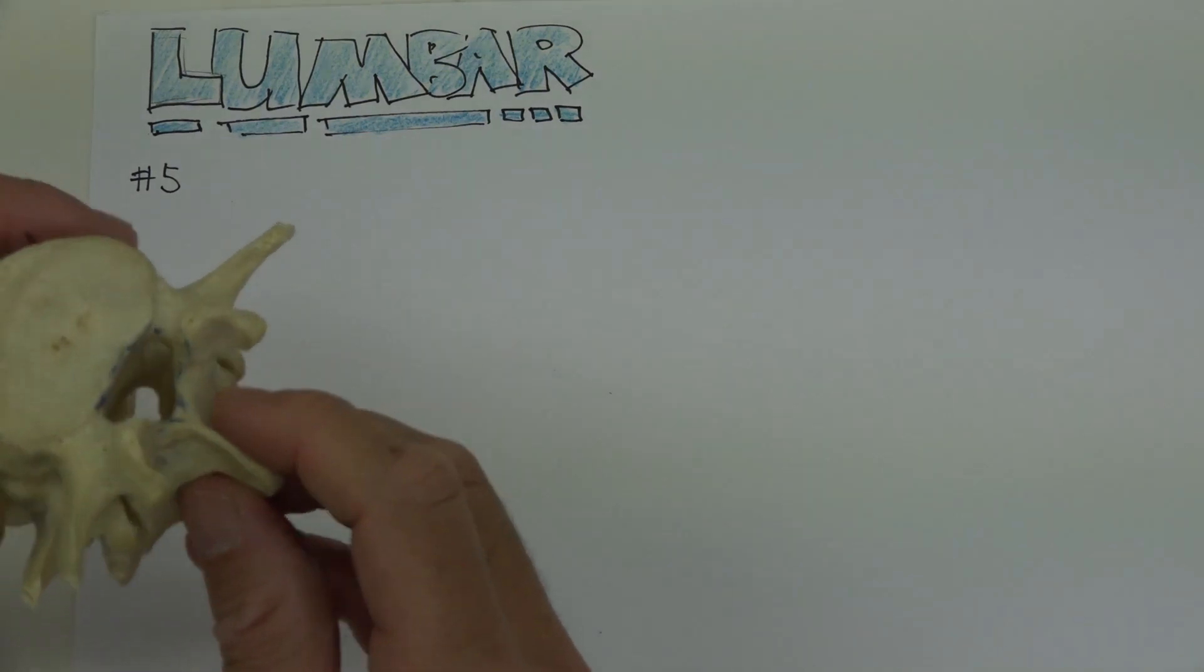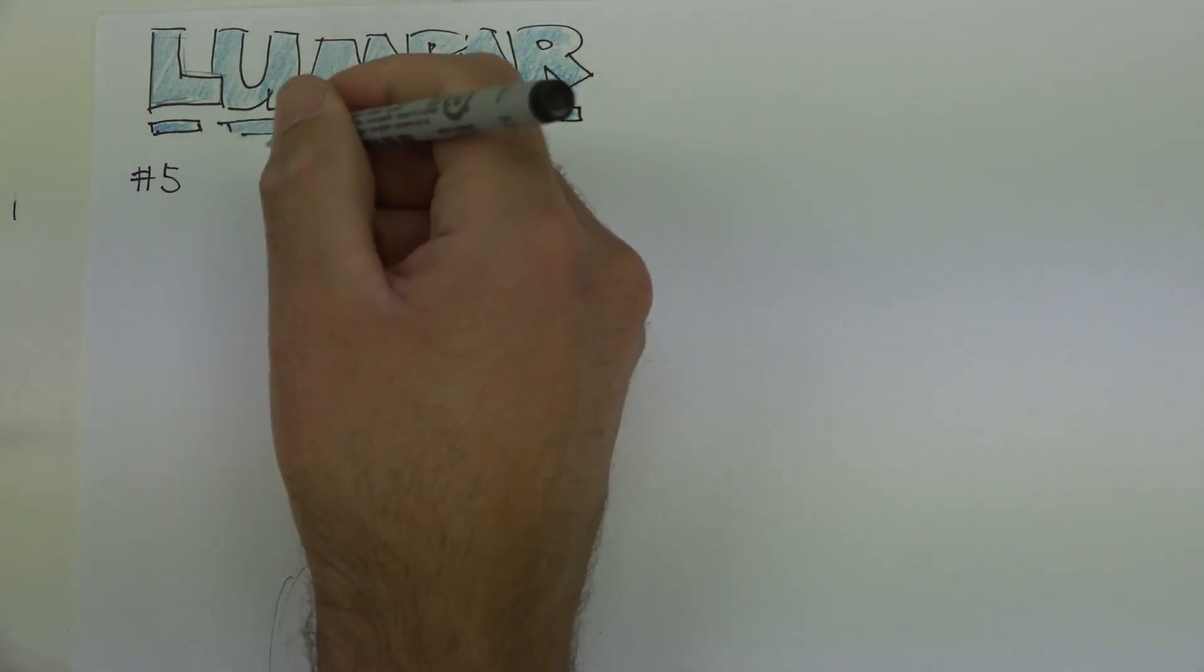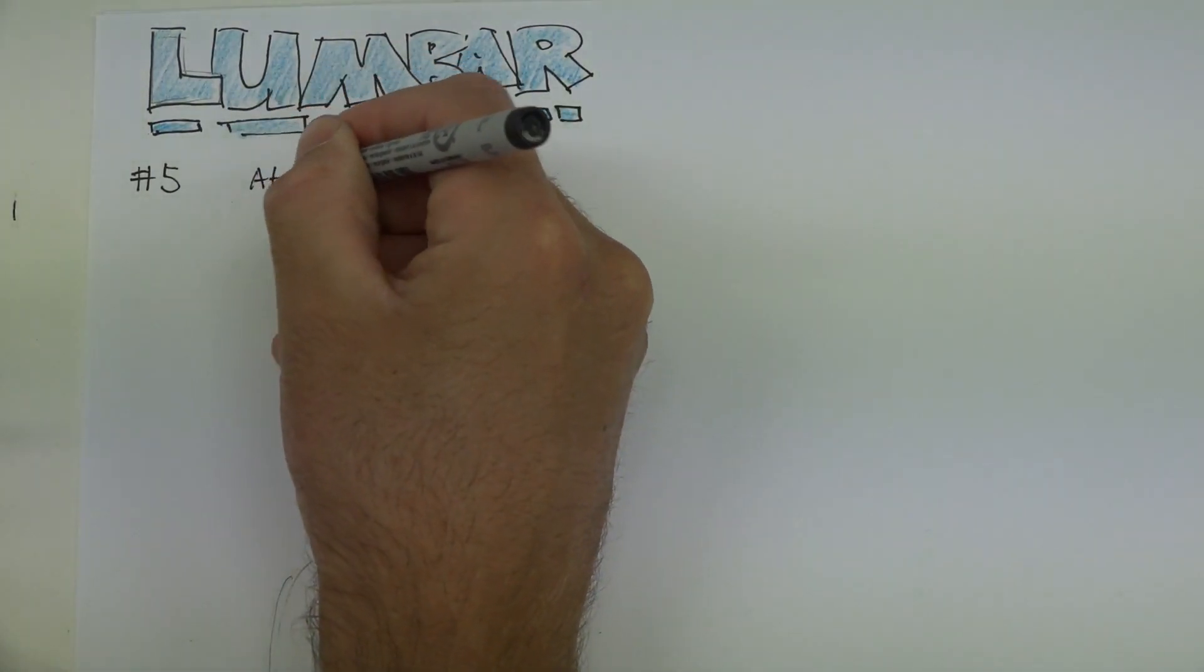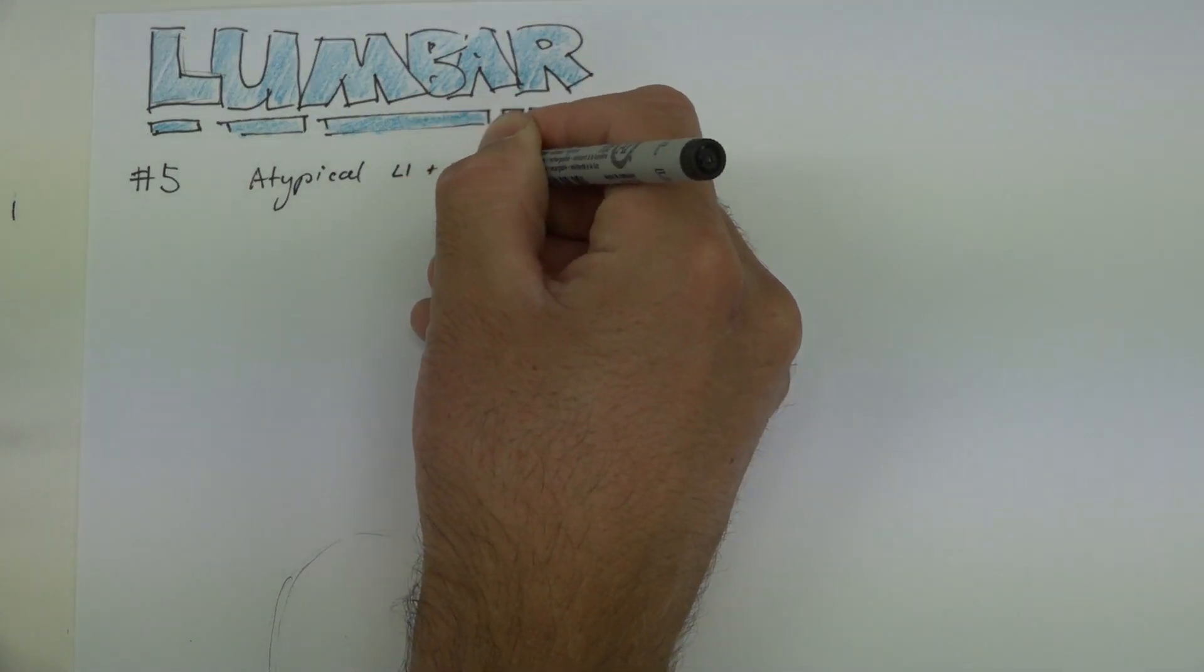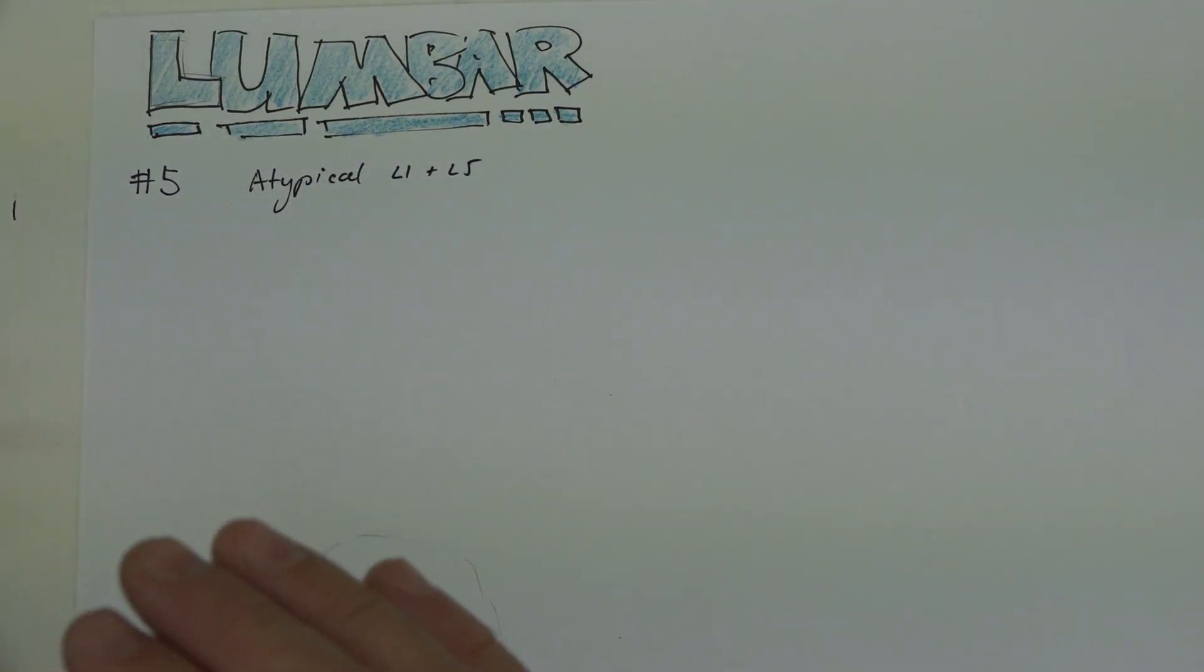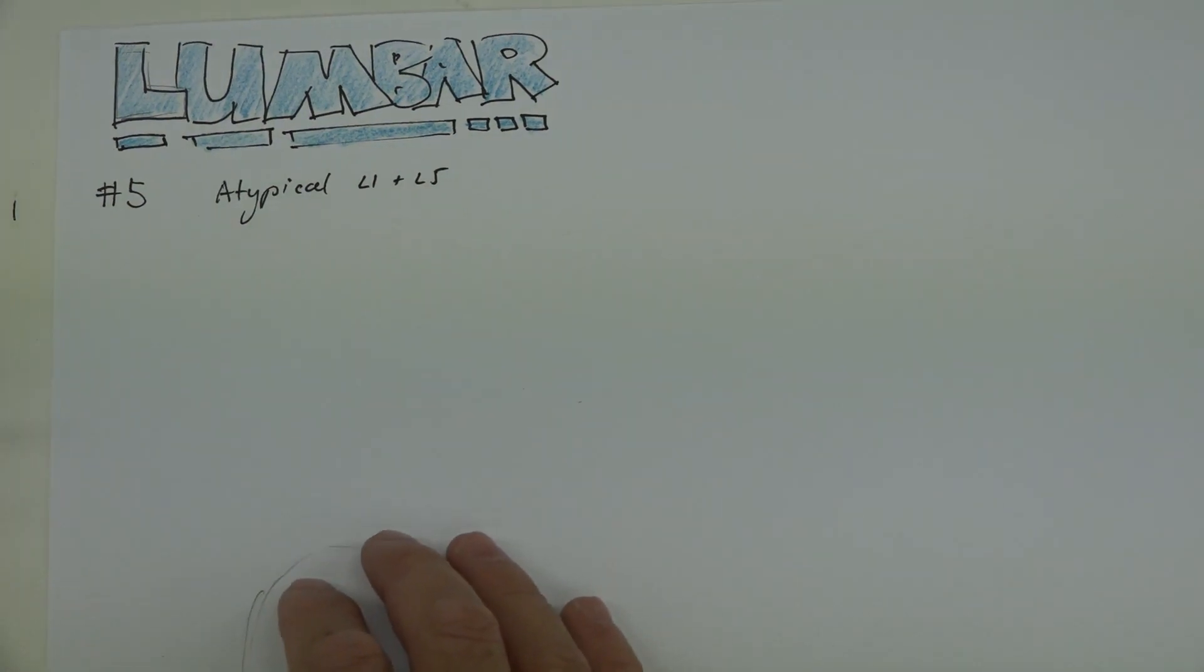So let's have a look at how they differ from the rest of them. The differences with your lumbar vertebrae is they are all fairly similar. Our atypical ones, which we have talked about in the other segments, are those L1 and L5. And that's because we have a change from the thoracic to the sacral at either end.